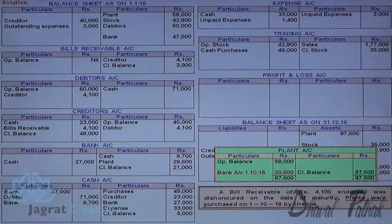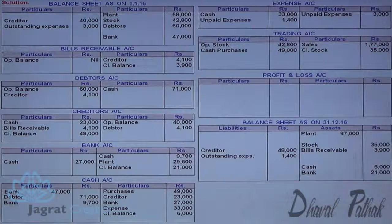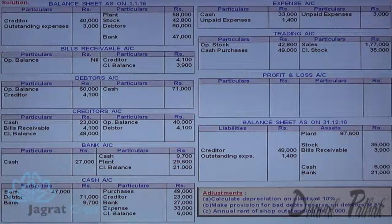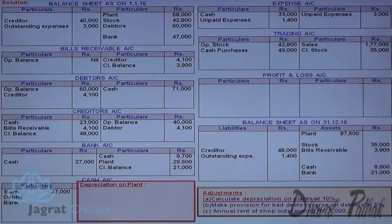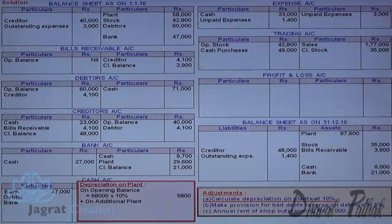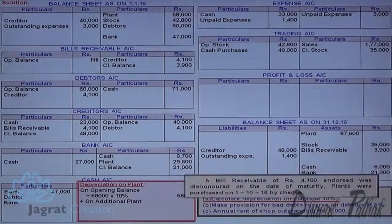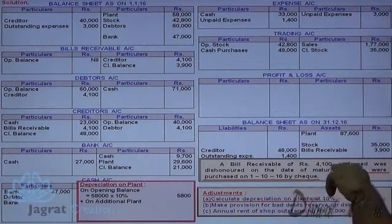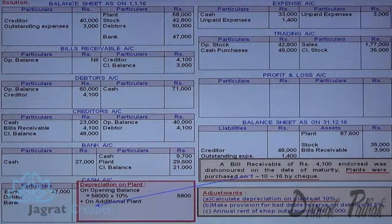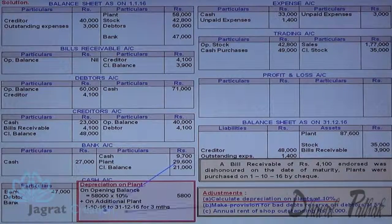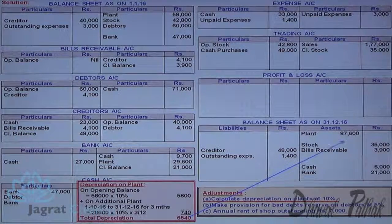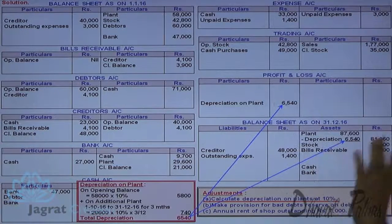This is how plant account gets closed. Now, for adjustments: calculate depreciation on plant. On opening balance of 58,000, depreciation is for the whole year at 10%. On plant purchased during the year of 29,600, depreciation is for three months from 1/10/2016 to 31/12/2016 — calculated as 29,600 × 10% × 3/12. This total depreciation is deducted from plant and debited to profit and loss account.